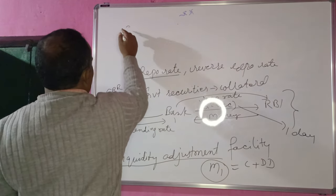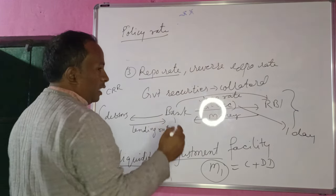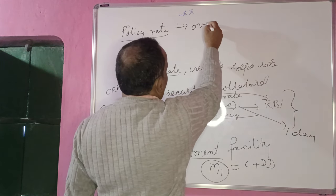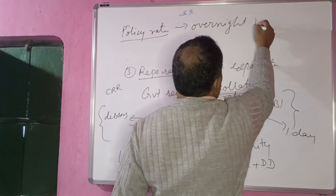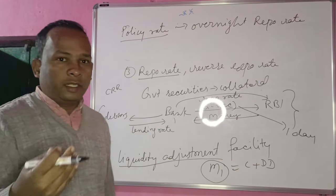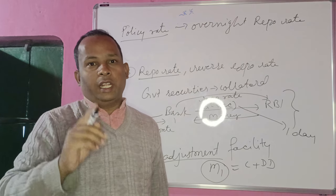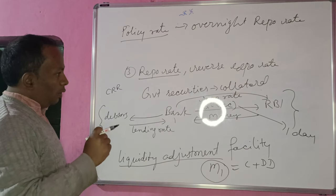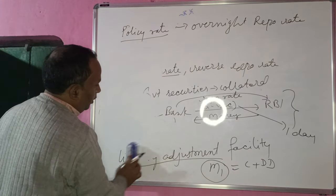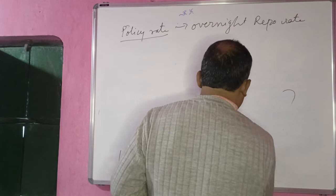When you see in the newspaper that the policy rate has been increased or decreased by RBI, that is nothing but the overnight repo rate — the interest rate paid by banks to RBI for getting money for not more than a day. Now let us see how RBI uses the repo rate to control money supply in the economy.